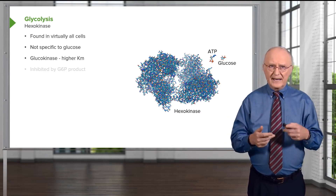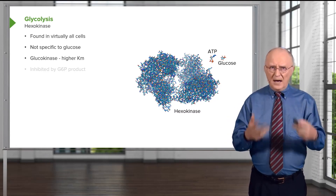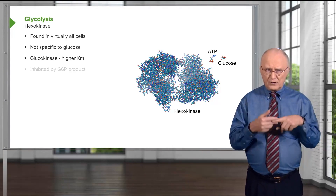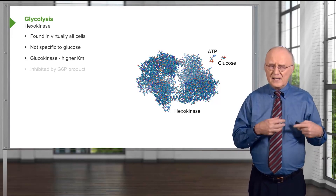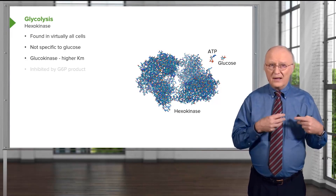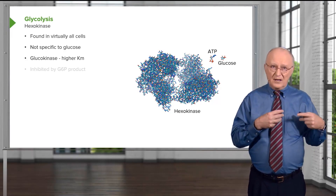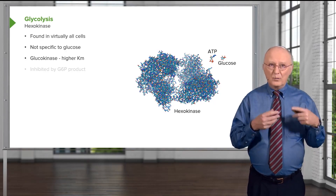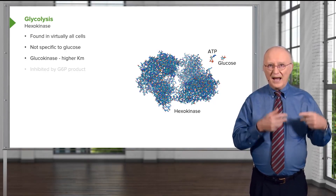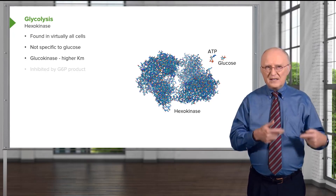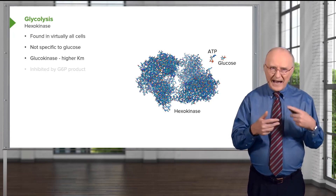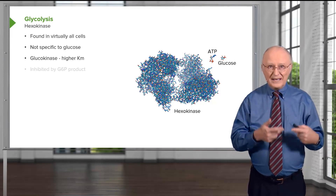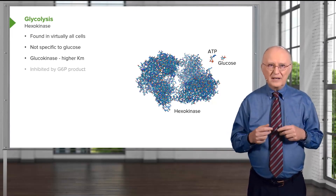Glucokinase, which is a related enzyme, has a higher KM, which means it requires a greater amount of glucose to work on, and glucokinase is found in the liver. That turns out to be important because glucose is made in the liver. With glucokinase being in the liver and having a higher KM, it means that glucokinase will not typically be active under the glucose concentrations where the liver is making glucose. So that balance is really important.